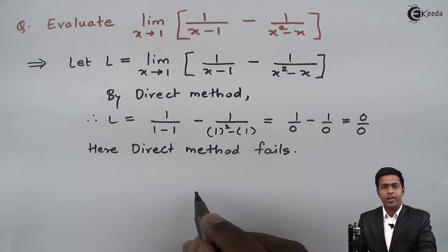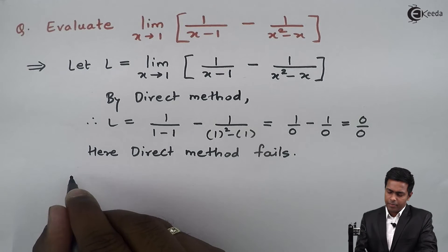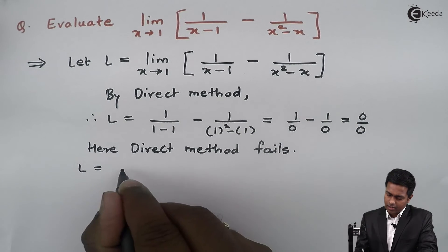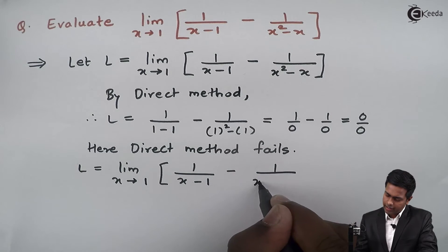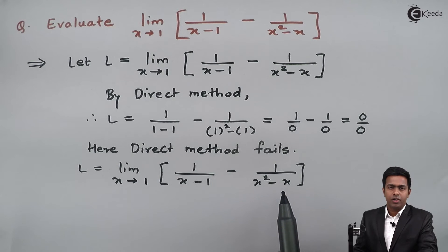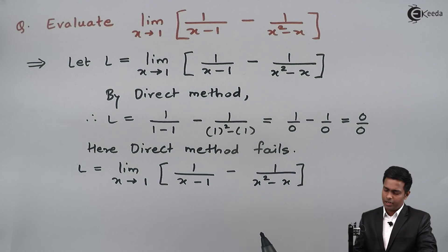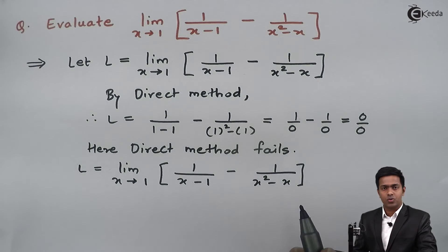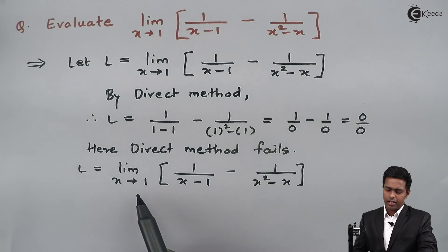If direct method fails, we have to look for some other method to get the value of this limit. So let's rewrite the given limit. Here L is the limit as x tends to 1 of 1 upon x minus 1, minus 1 upon x squared minus x. Observing this algebraic function, we have two terms: 1 upon x minus 1, and 1 upon x squared minus x. We can simplify the second term by taking x outside from the denominator, giving x into x minus 1. Then taking the LCM, we will get a term for which we can again substitute x as 1. So I will apply the method of simplification.